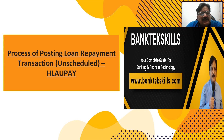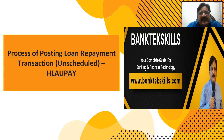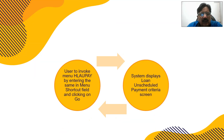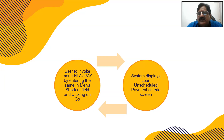The process is for posting loan repayment transactions — unscheduled means not as per the EMI schedule, when you want to prepay the loan. To invoke the menu option HLAUPAY, enter it in the menu shortcut field and click Go. The system displays the loan unscheduled payment criteria screen.